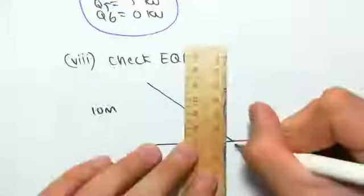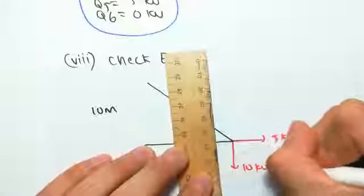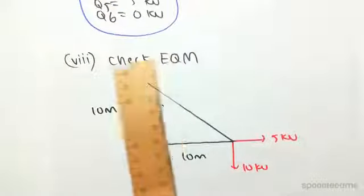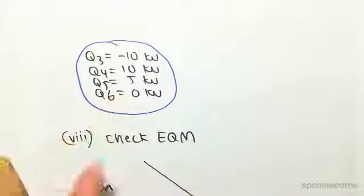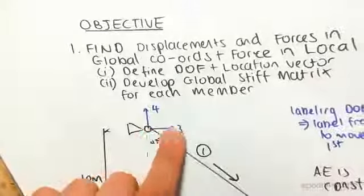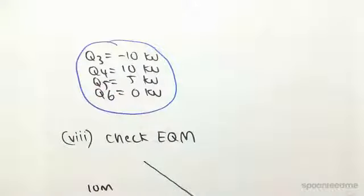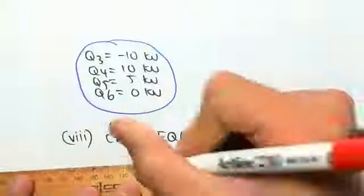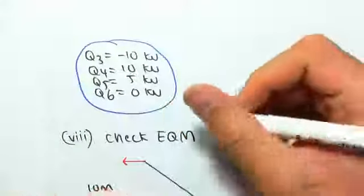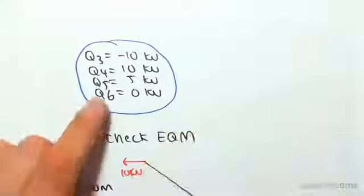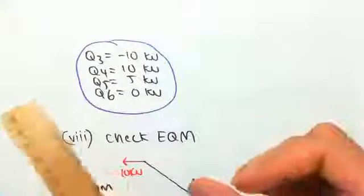5 kilonewtons that way, 10 kilonewtons that way. And now we can start filling in all our other forces. So q3 and q4 - three is going that way, four is going that way. We're given negative 10 there, so obviously it's going to be going in the opposite direction, so there's 10 kilonewtons. q4 is defined positive as up, so that's 10 kilonewtons there.